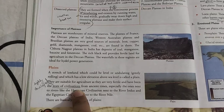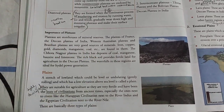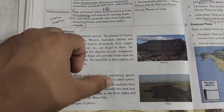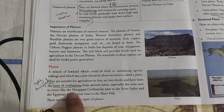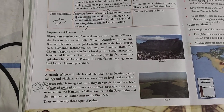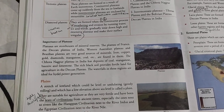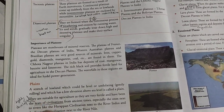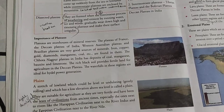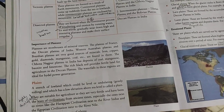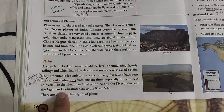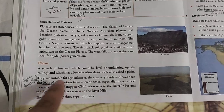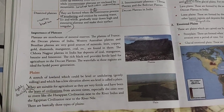Plains are suitable for agriculture as they are very fertile and have been the seeds of civilization — meaning highly developed civilizations have developed in plain areas from ancient times, especially next to rivers like the Harappan civilization next to the Indus River, and the Egyptian civilization next to the Nile.